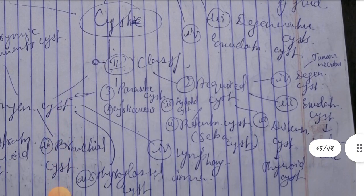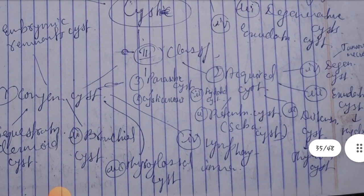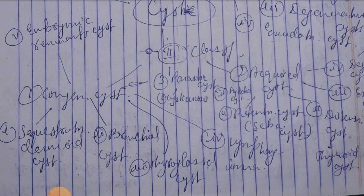Then second, classification. The classification is congenital cysts which are first esophageal cyst, second bronchial cyst, then third thyroglossal cyst.